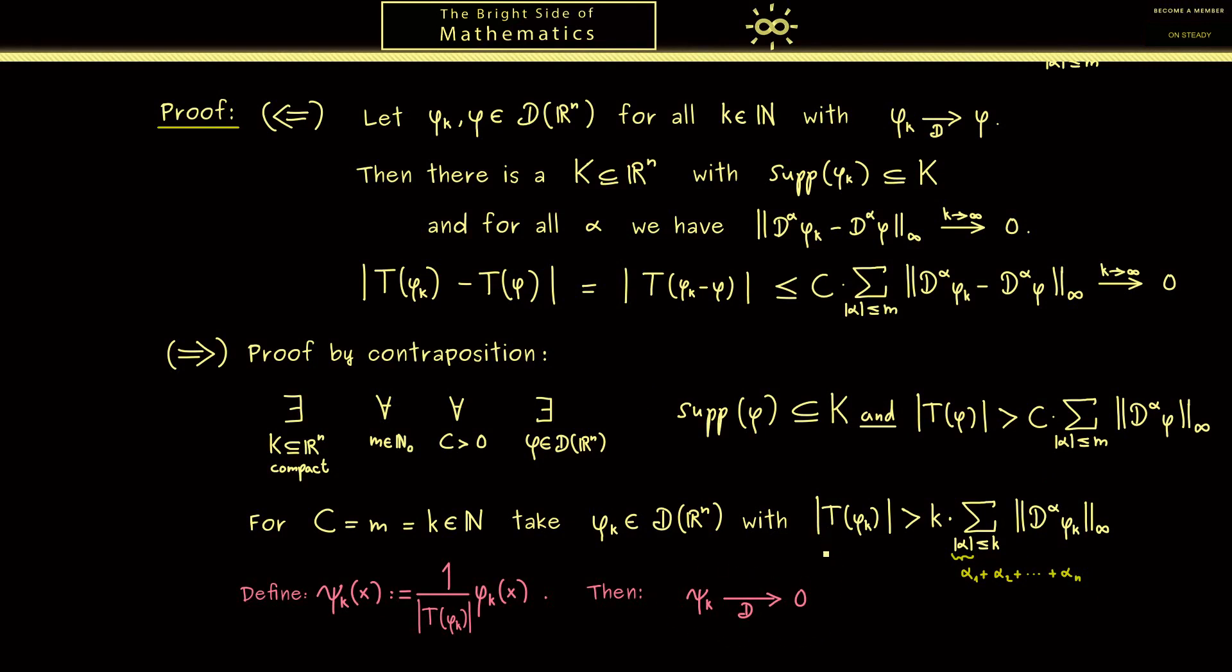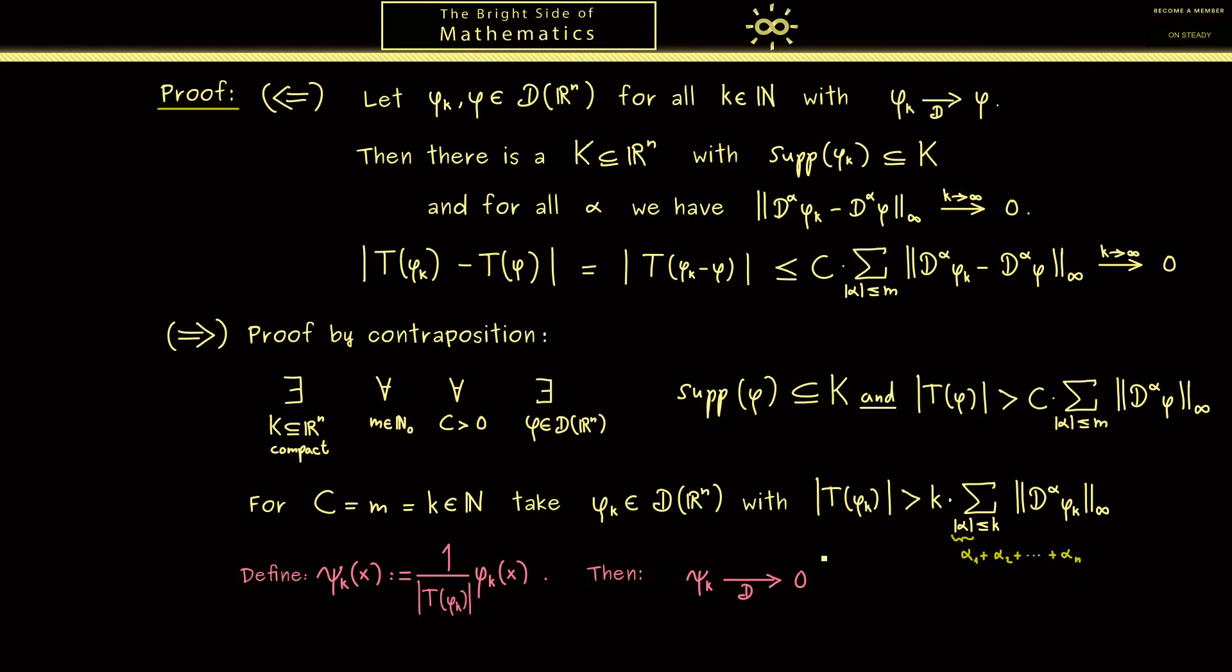However, now you might already see the images under T don't converge to zero. To see this, just look at the absolute value of T of psi_k, which is by the linearity just 1 over the absolute value of T of phi_k times the absolute value of T of phi_k, which is of course always 1. In other words, it does not converge to zero. Now this simply means the linear map T is not continuous, and that is what we wanted to show from the beginning, so our proof is finished.